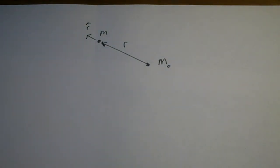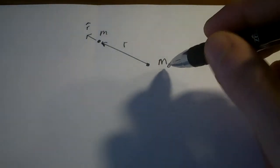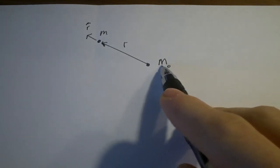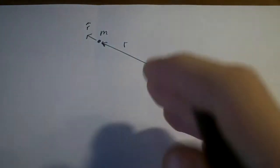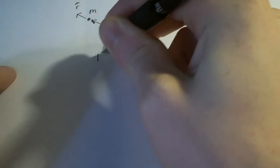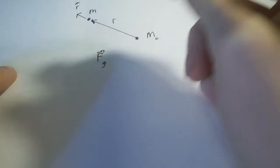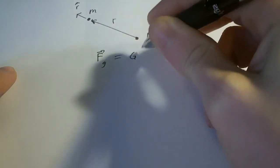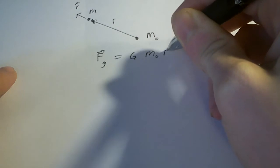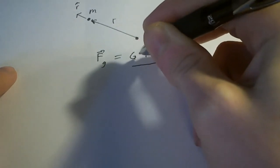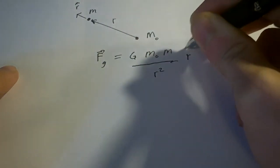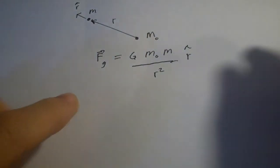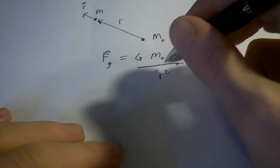Hi everyone. This video will be about Gauss's Theorem for Gravitational Fields. Recall from physics that if you have some mass m0 and we put another mass m a distance r apart, then the force will be in the radial direction. The gravitational force is capital G — Newton's gravitational constant — times m0 times m, over r squared, in the radial direction.